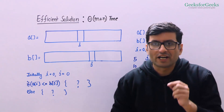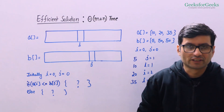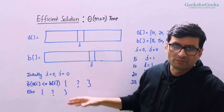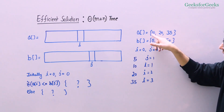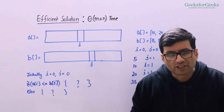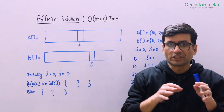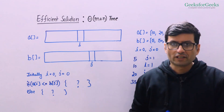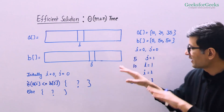Let us now talk about the idea for the efficient solution. We are going to traverse both arrays simultaneously using two index variables i and j: i to access array A elements and j to access array B elements. For example, with these two arrays, i and j are initially zero, meaning we are currently referring to elements 10 and 5. We compare a[i] with b[j], and there are two cases: when a[i] is smaller than or equal to b[j], and when b[j] is smaller.